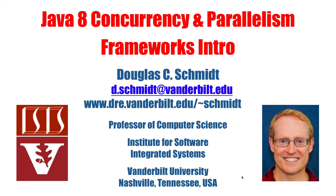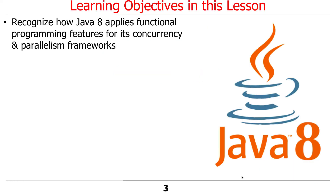We also talked about collect, reduce, and for-each. What we're going to do now is move to the next phase, which will hopefully be much more interesting, because we're going to start talking about concurrency and parallelism. We'll discuss how Java 8 allows you to apply these functional programming features to amplify and better utilize the concurrency and parallelism frameworks it provides.